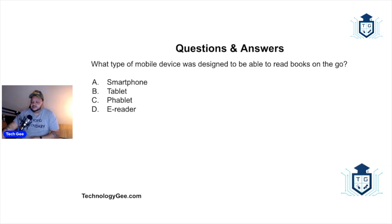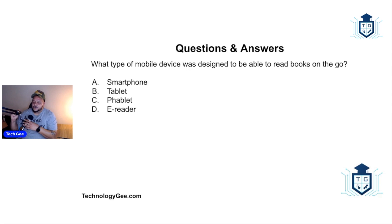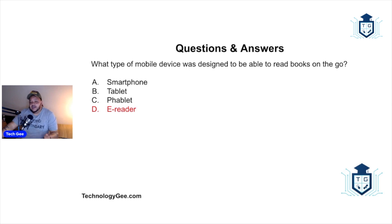Question one: What type of mobile device was designed to be able to read books on the go — a smartphone, a tablet, a phablet, or an e-reader? The correct answer is an e-reader.